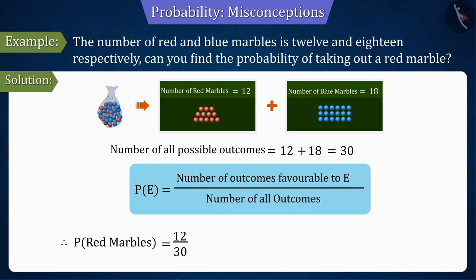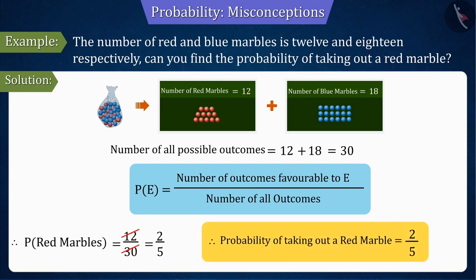So, from the formula, the number of favorable outcomes is equal to 12 and the number of all possible outcomes of the experiment is 30. On solving this, we get the probability of picking a red marble as 2 by 5. So, we can say that the probability of getting a red marble is 2 by 5.